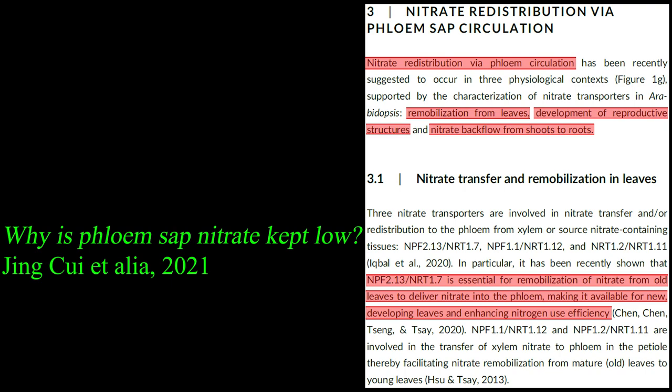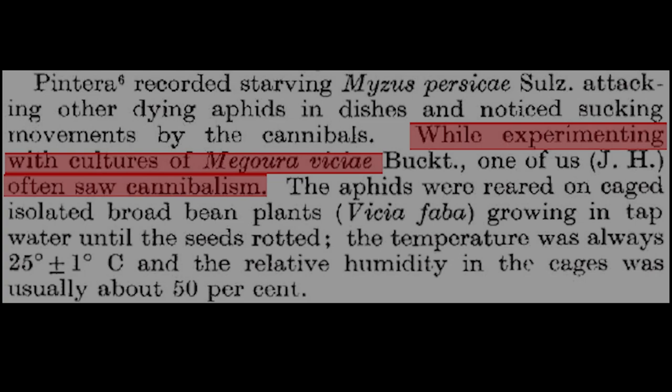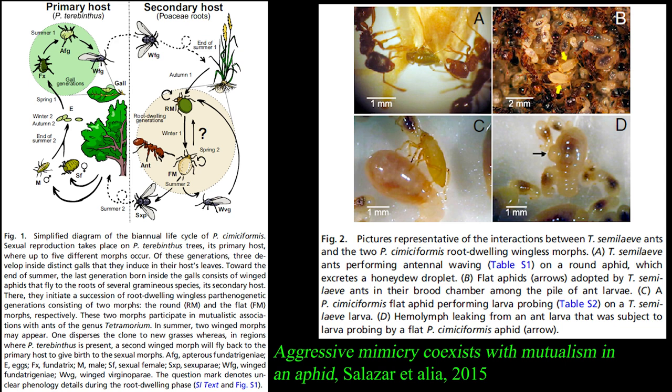Aphids do not always exclusively feed on plants. Some aphids, like Megura viciae, are known to cannibalize other aphids, and the gall-forming aphid Ceratoglyphenia syracicola is known to bite people, causing welts and rashes that last for multiple days in several cases. Periphyllus simiciformis is an aphid that mimics the cuticular hydrocarbon scent composition of Tetramorium ants, and this allows certain individuals to feed on their larvae.